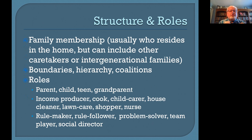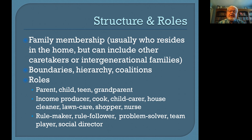It's important to look at family characteristics to really understand how families function. First, their structure and roles: family membership usually refers to the people who reside in the home, though it can include other caretakers or intergenerational family members. The boundaries, hierarchy, coalitions, and roles — which may be varied and sometimes shared — identify how the family operates. There may be parents and children, but also an income producer, cook, shopper, nurse, rule maker, problem solver, or social director.